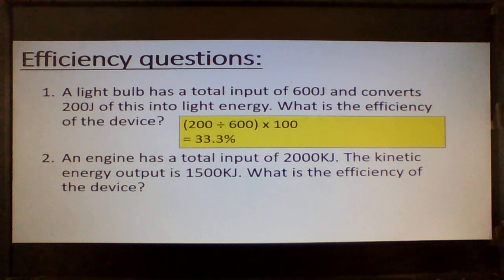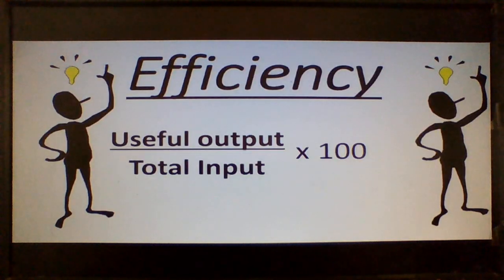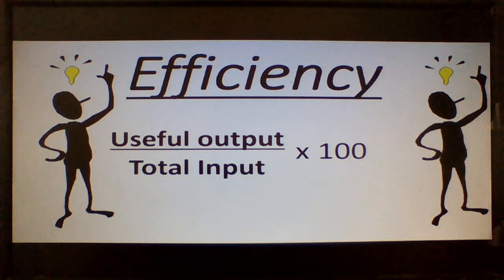And then the second one, the engine has a total input of 2,000 kilojoules. The kinetic energy output, that's useful, is going to be 1,500 kilojoules. What is the efficiency? We're going to do 1,500 divided by 2,000 times 100 gives you an efficiency of 75%. So let's remember, ladies and gentlemen, efficiency is the useful output divided by the total input times by 100.